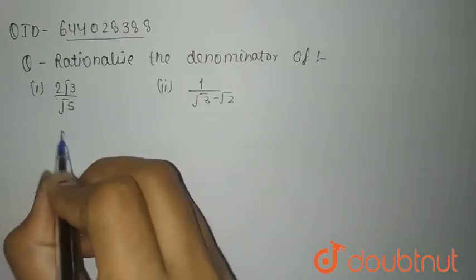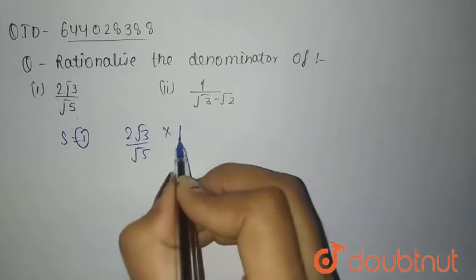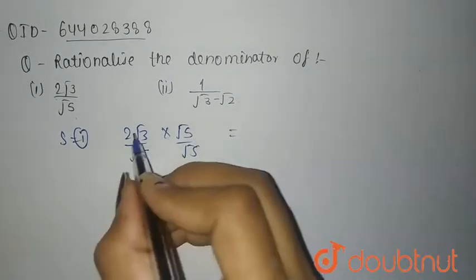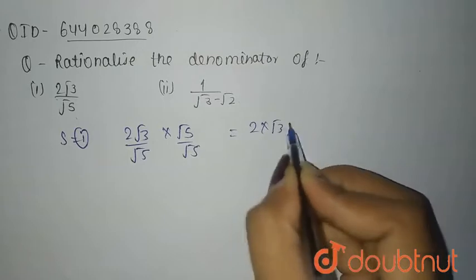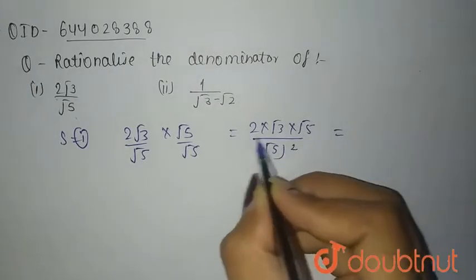So the first is 2√3/√5. Rationalizing it by multiplying √5/√5, the denominator becomes √5 × √5, which gives you 2 × √3 × √5 in the numerator and (√5)² in the denominator.